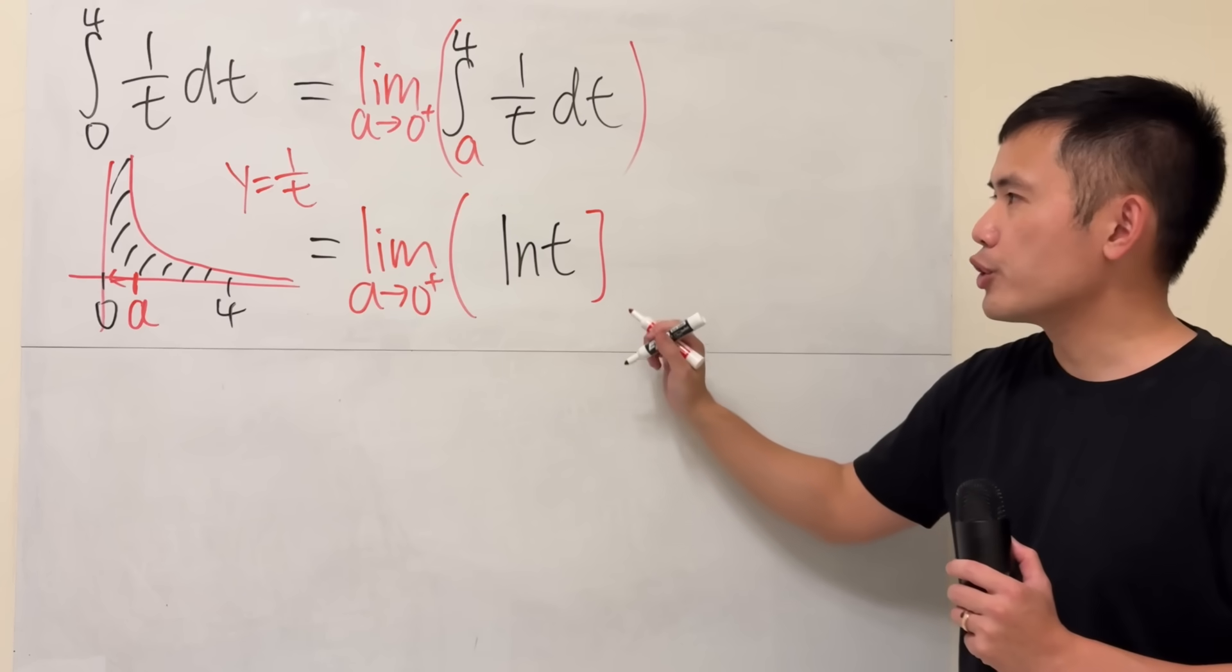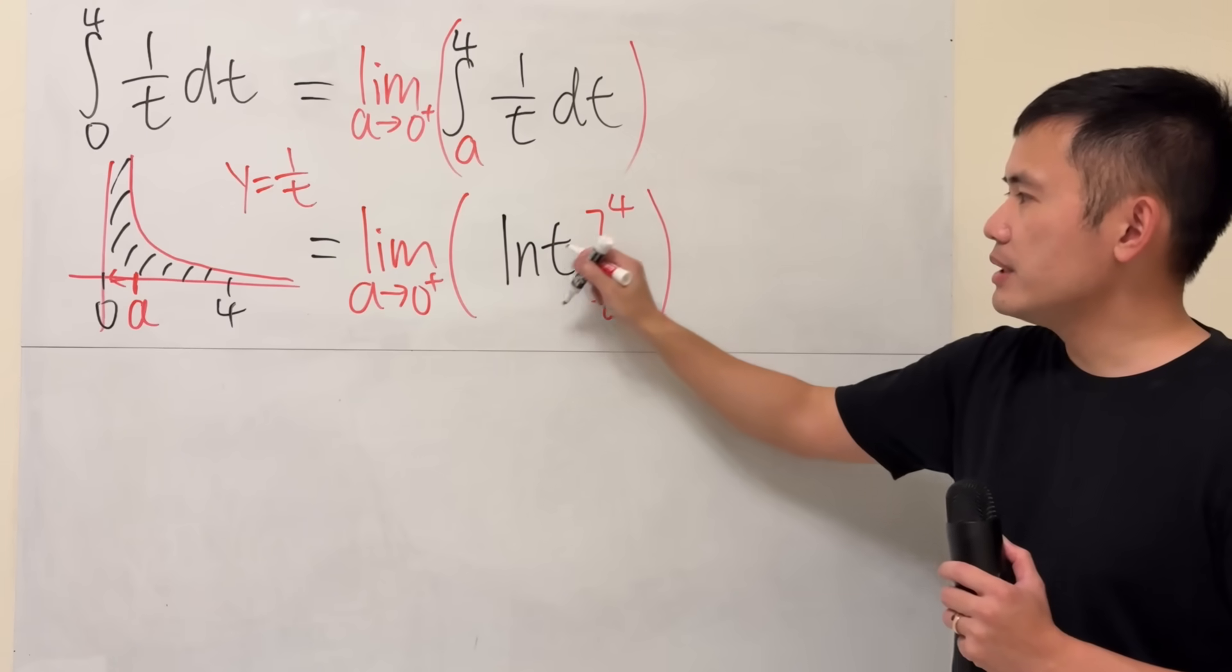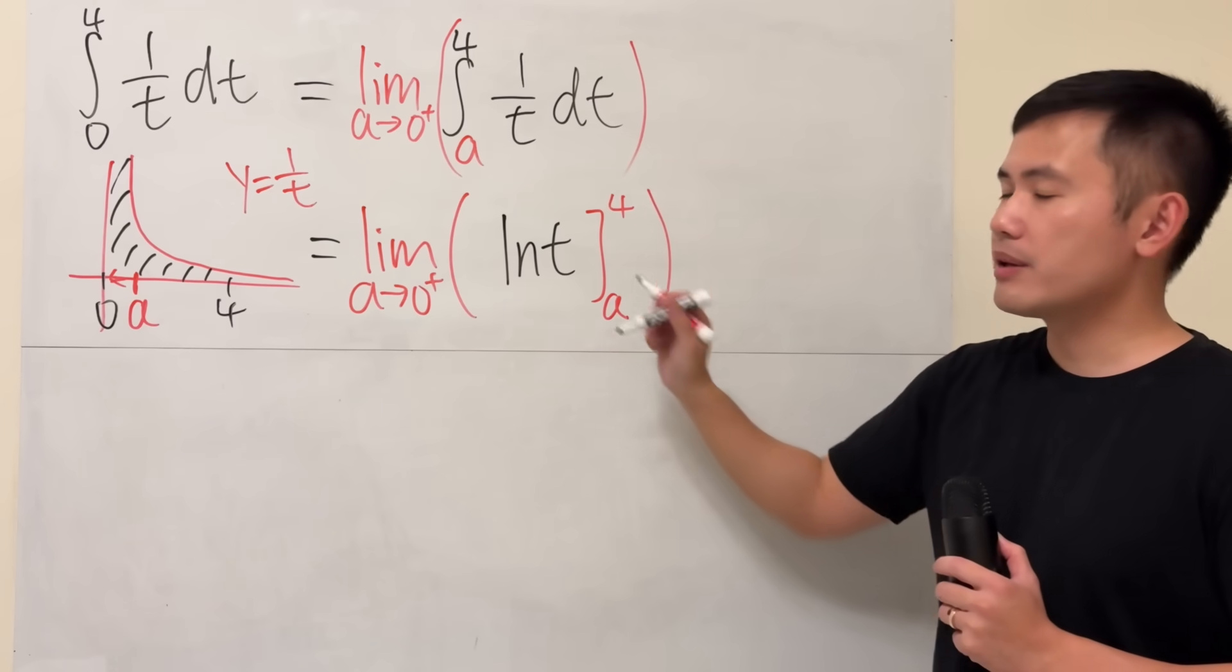But now, we are going to be putting a here, and then 4 here. Putting down the 4 first, and then subtract, putting down the a.